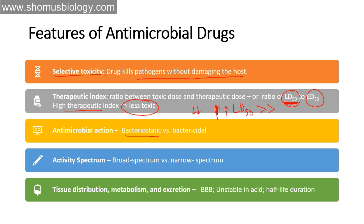There are two types of antimicrobial action: bacteriostatic, which slows down microbial growth, and bactericidal, which kills bacteria. Activity spectrum can be either broad spectrum — effective against a vast range of microorganisms — or narrow spectrum, targeting only a few specific microorganisms. Tissue distribution, metabolism, and excretion are also important, as not all antibiotics are ingested in the same time frame. Some are more or less stable in acid or base, and their half-life is important to understanding their pharmacokinetics — how the antibiotic enters the body, is processed by the liver, and is ultimately excreted.